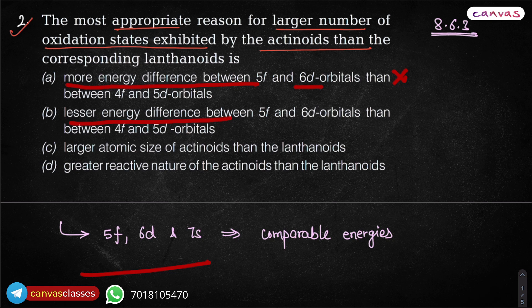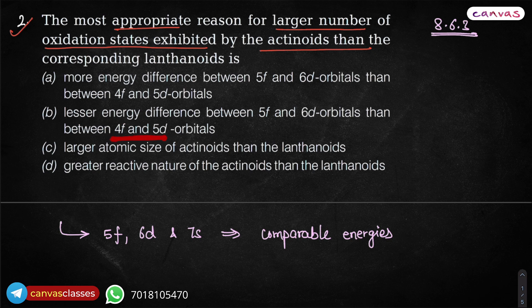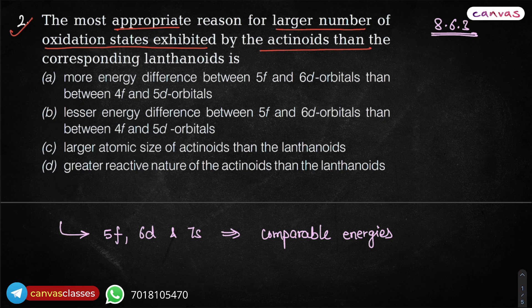More energy difference between 5f and 6d? No, that is wrong. Lesser energy difference between 5f and 6d orbitals than between 4f and 5d. Yes, because this 4f and 5d, it is for lanthanoids. This is for actinoids. So in lanthanoids, the energy gap is not very small. But in actinoids, the energy gap is very small. So that is the true reason.